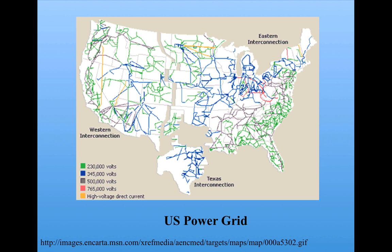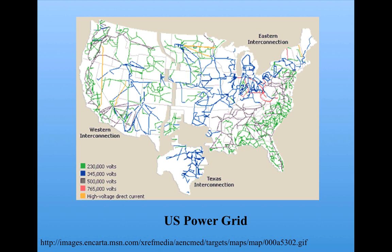The U.S. Power Grid is another example of a network in which the nodes are power substations and the links are high voltage transmission lines between power stations. In economics, we can have networks such as networks of banks. Each node is a particular bank and banks are linked if they have strong interactions such as loaning each other large amounts of money. This kind of network can be disrupted, as we saw during the 2008 financial crisis. We can see that JPMorgan Chase is a hub in this network, and if this bank gets disrupted, the whole network can feel the repercussions.